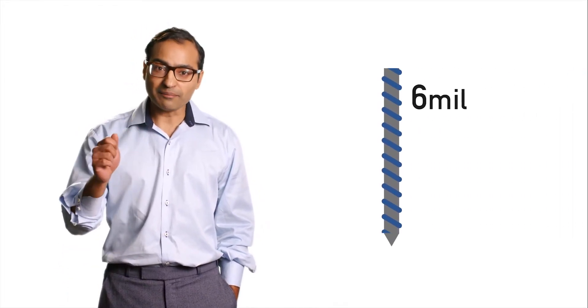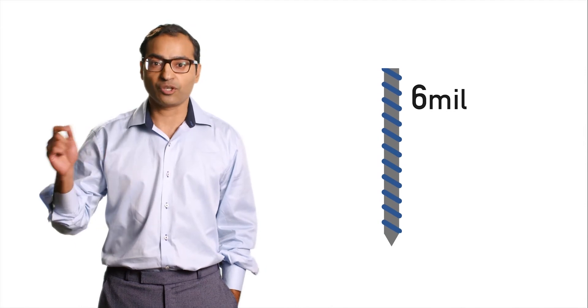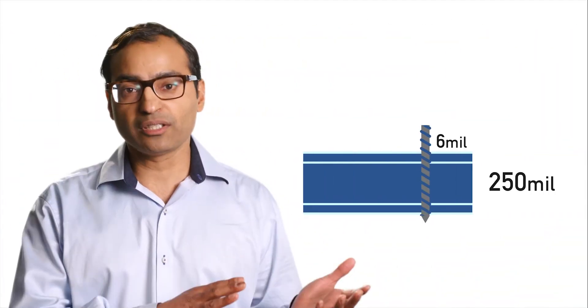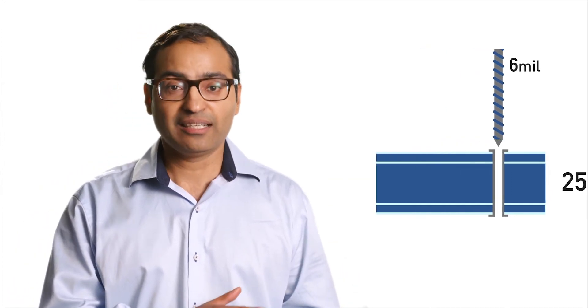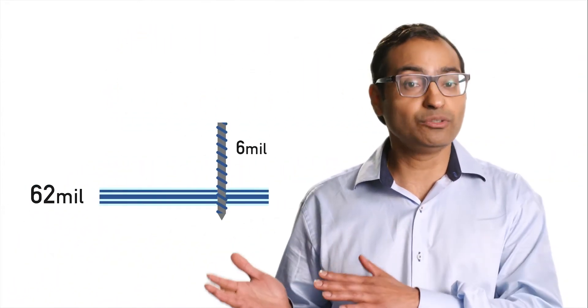For example, the smallest mechanical drill size is 6 mils, but what really matters is how it relates to the board's total thickness. A 6 mil drill on a 250 mil board is much more challenging than a 6 mil drill on a 62 mil board.